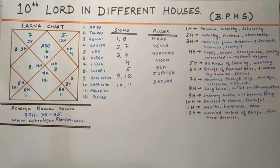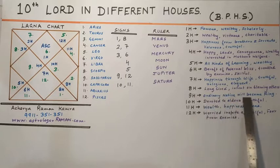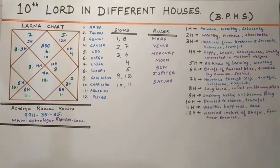If the 10th Lord is placed in the 9th house, one born of royal lineage will become a king, whereas the ordinary native will be equal to a king. This placement will confer wealth and progeny happiness.